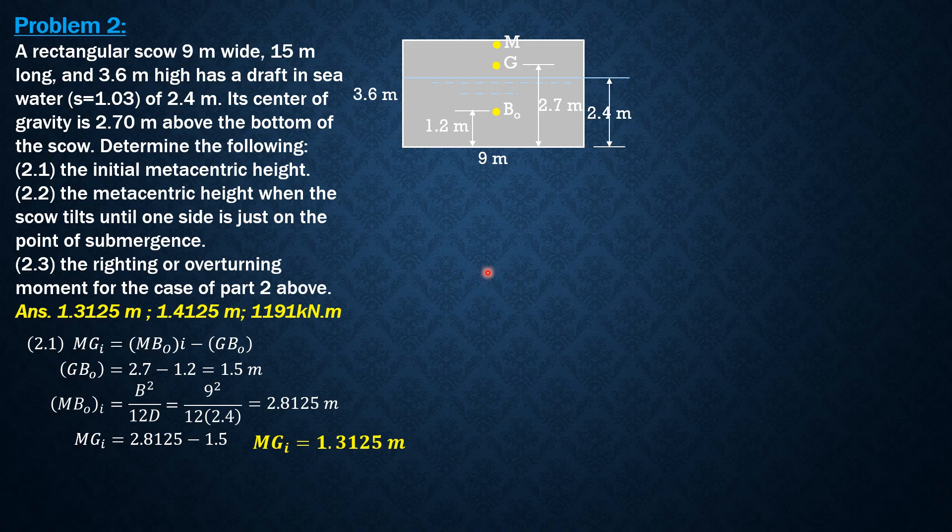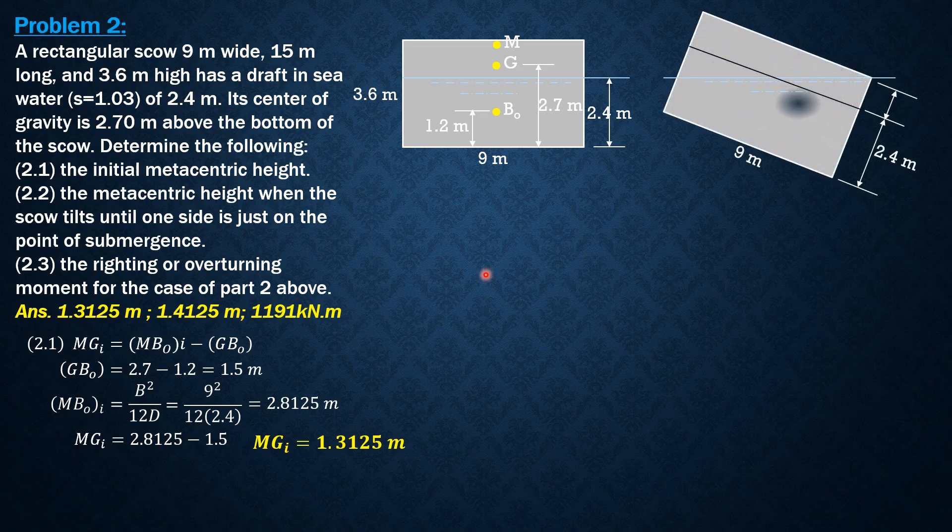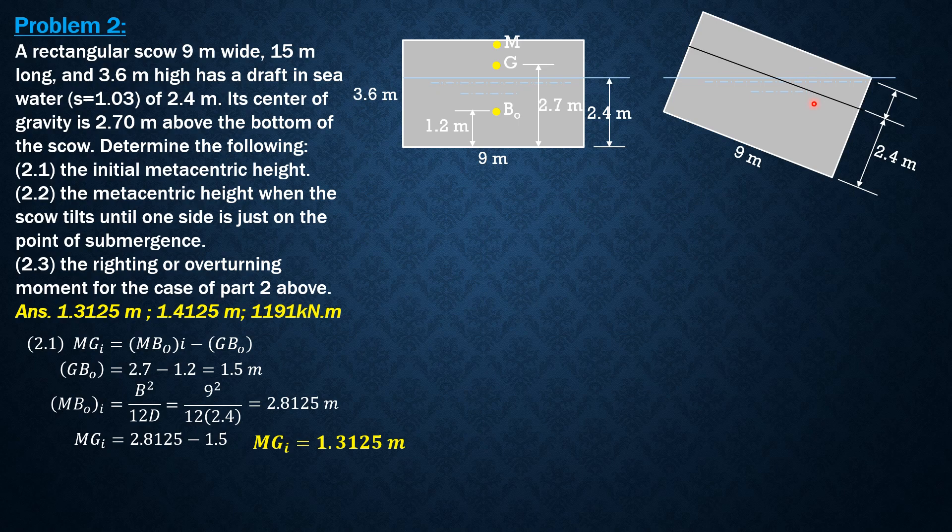For question number two, the metacentric height when the scow tilts until one side is on the point of submergence. It tilts, so this is now the point of submergence. Because the height of the scow is 3.6 minus the draft 2.4, this is 1.2 meters, the wedge of immersion height.